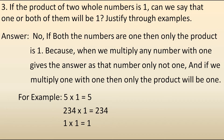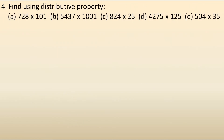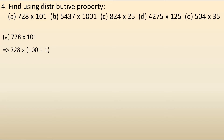Now let's move to the fourth question: find using distributive property. The first is 728 into 101. Distributive property says we can split one of the numbers and multiply — it becomes easier. Here we will split 101 as 100 plus 1. The distributive property is A into (B plus C). Comparing, A is equal to 728, B is equal to 100, and C is equal to 1.